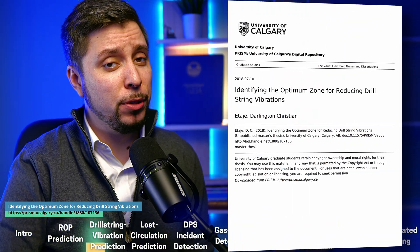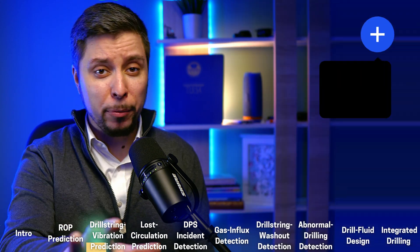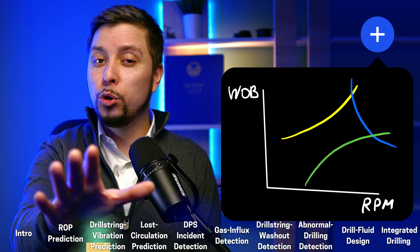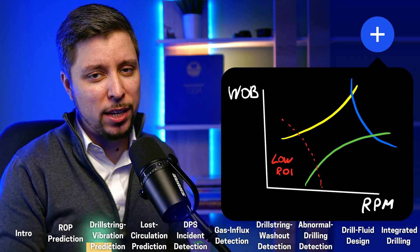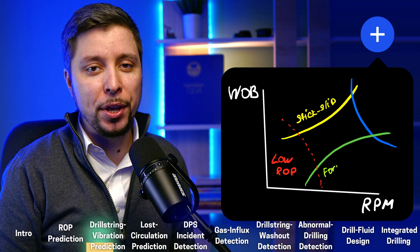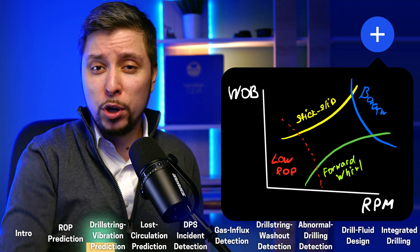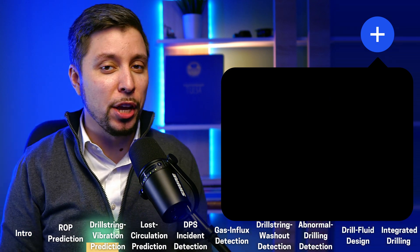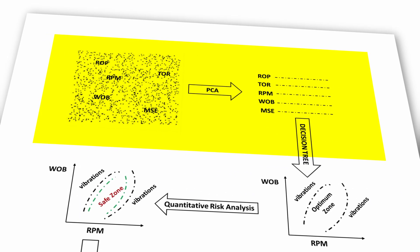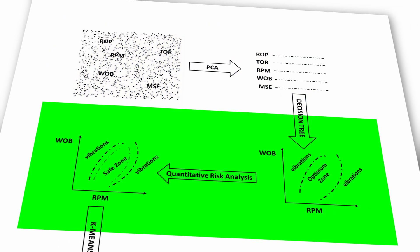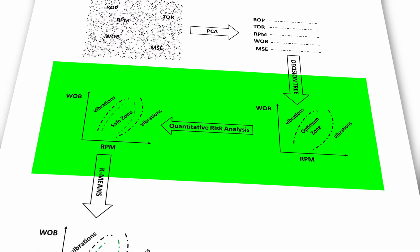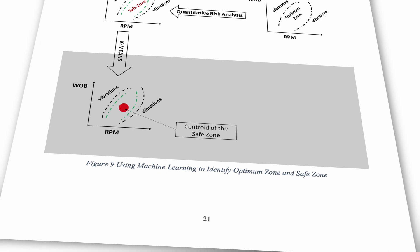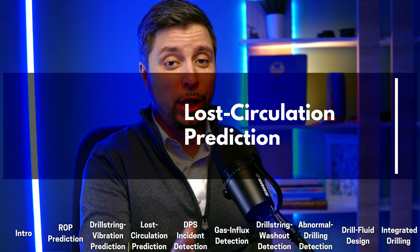In a dissertation published in 2018, the authors were concerned with determining drilling parameters for minimizing the occurrence of vibration. The two important parameters for detecting vibrations are weight on bit and rotational speed, and the machine learning task is to keep those parameters in the optimal zone. They used a variety of ML methods, including PCA for variable transformation and reduction, decision trees to classify data points into different zones, and K-means clustering to identify the exact weight on bit and rotational speed.